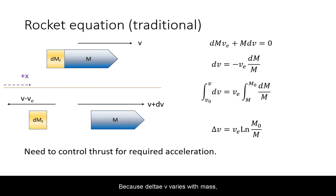Because delta v varies with mass, rocket engines often allow for variable fuel flow to control the thrust and hence acceleration.